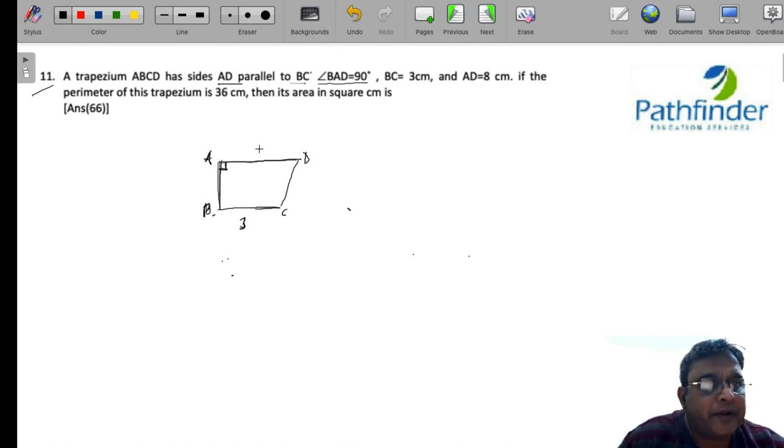BC is 3 centimeters, AD is 8 centimeters, and the perimeter of the trapezium is 36 centimeters. So, if this side is X, AB is X, then BC must be 25 minus X.